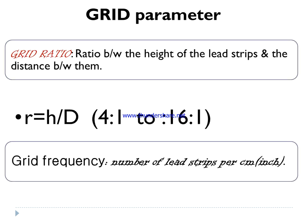The ratio of the height of the lead strip to the distance between two lead strips is called the grid ratio. The formula for grid ratio is: R = h/d, where h denotes the height of the lead strips and d denotes the distance between two lead strips.